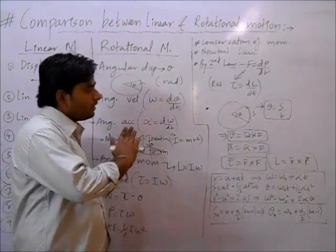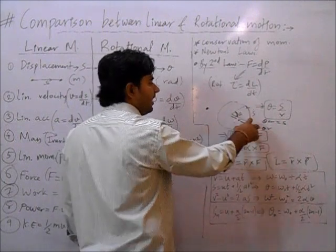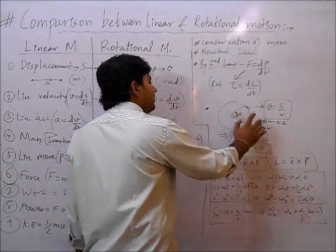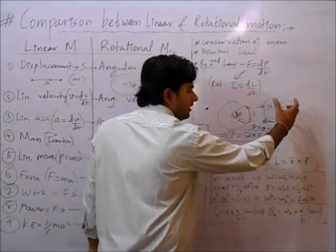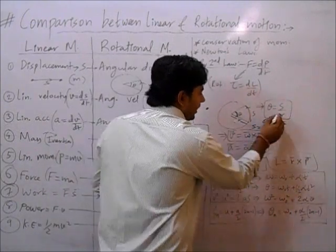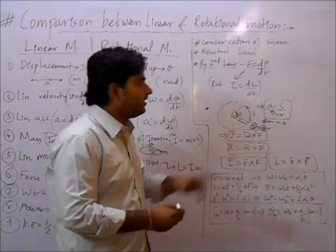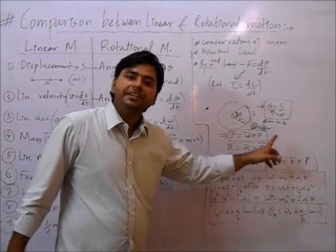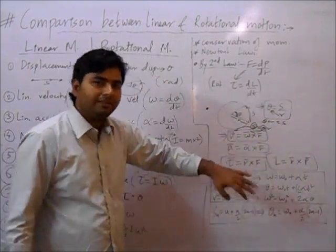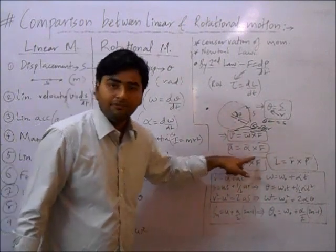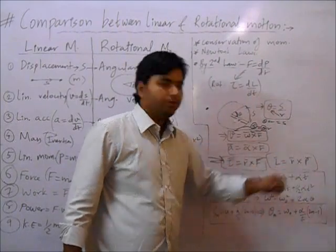There are relations between angular and linear quantities. If a body undergoes rotational motion, theta is the angular displacement and s is the linear displacement. The central angle formula gives θ = s/r, so s = θr. Differentiating, ds/dt = (dθ/dt)·r, which gives v = ωr. Similarly, a = αr. Also, τ = rF and L = r × P.